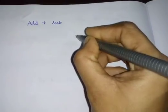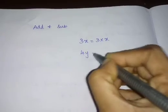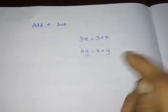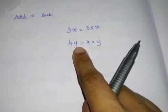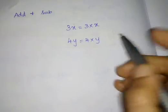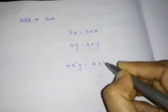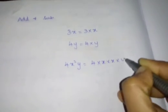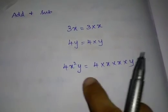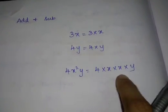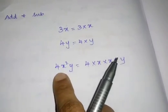You know 3x means nothing but 3 into x, right? 4y is nothing but 4 into y. Instead of writing 4 into y we write 4y. Instead of writing 3 into x we write 3x. Likewise, 4x²y — instead of writing 4 into x into x into y, we write 4x²y. These things you all know because we have used this in factors. The same thing: 4 into x into x into y can be written as 4x²y.